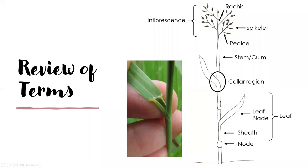At the top of the stem we have the inflorescence, which is the flowering head of a grass. Here the stem becomes the rachis. The flowering unit of a grass is called a spikelet, which contains all the flowering parts of the grass and is where seeds develop. If spikelets are held on a stalk, that stalk is called a pedestal, though I'll often just refer to it as a stalk to keep things simple. We're going to look at different types of inflorescences soon.